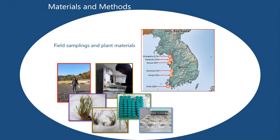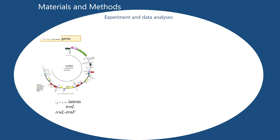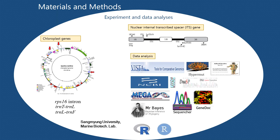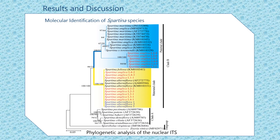For molecular identity, we used chloroplast and nuclear ITS genes to investigate the population genetic structure and determine molecular identity. The experiment was conducted at the Marine Biotechnology Lab, Sahmyook University, and we used several bioinformatics software tools for data analysis. For molecular identification, we conducted phylogenetic analysis of the Spartina species using nuclear ITS. Our results revealed that in some of the samples, we detected two divergent sequences that cluster in two different clades.